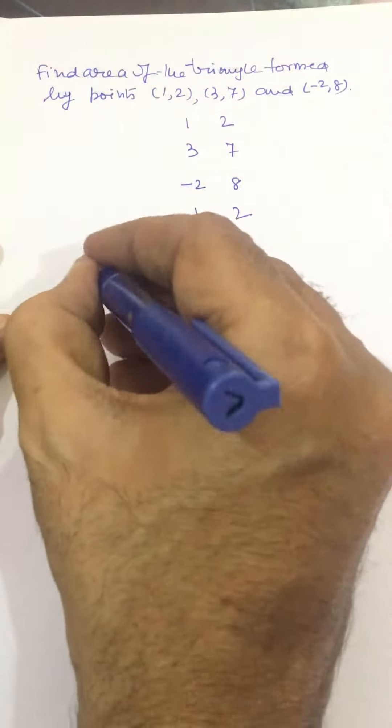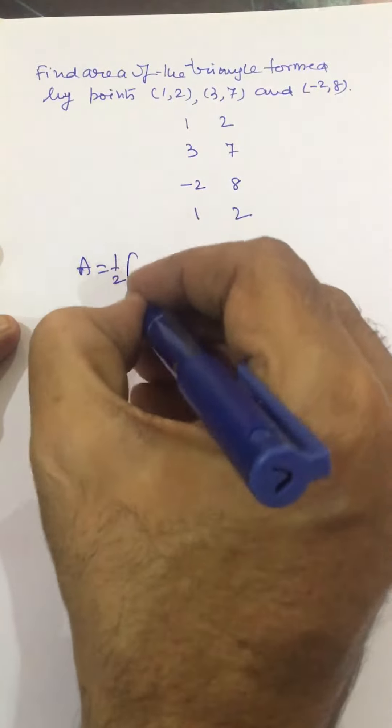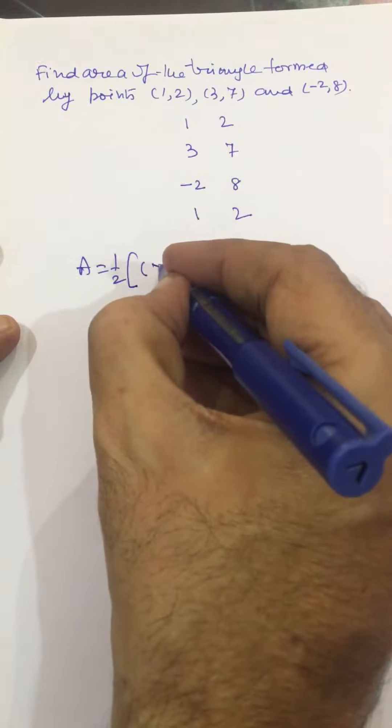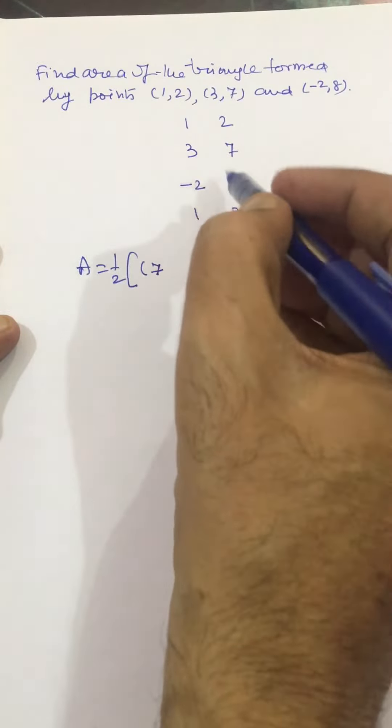area of this triangle will be given by half: 1 into 7, that is 7, plus 3 into 8, 24,